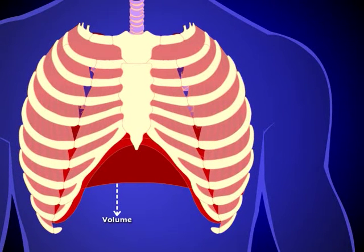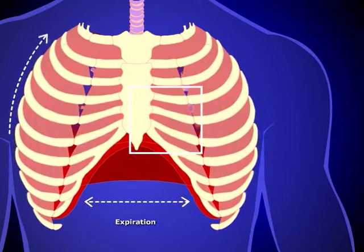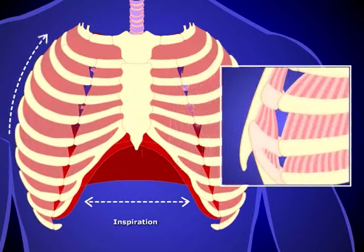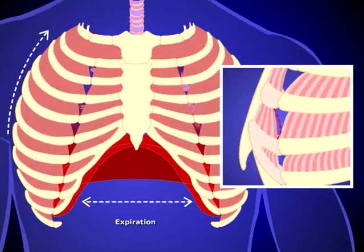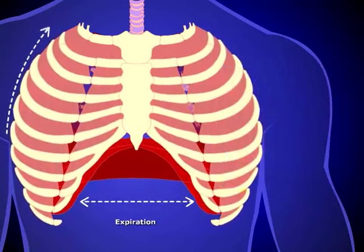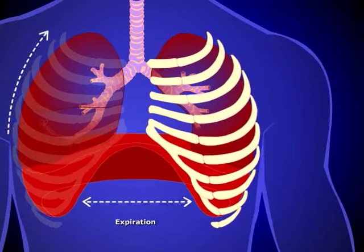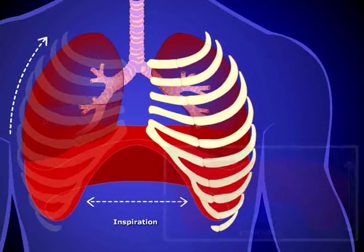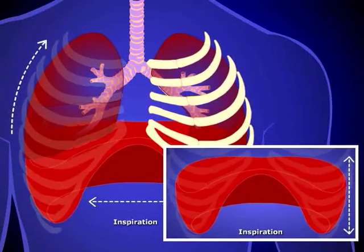When volume is decreased, pressure is increased. Let's focus on the movement of intercostal muscles during respiration. During inspiration, intercostal muscles contract, causing the ribs to elevate. This causes the anterior-posterior dimensions of the chest to increase. Simultaneously, the diaphragm contracts, increasing the vertical dimensions of the chest.